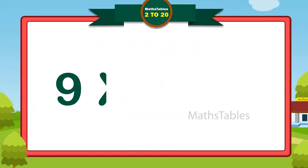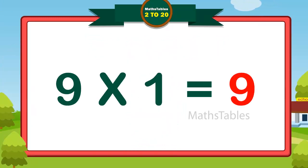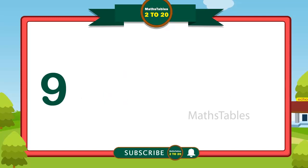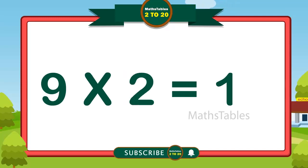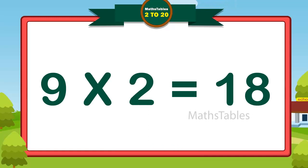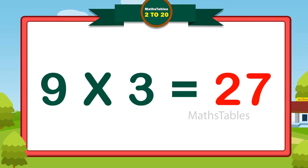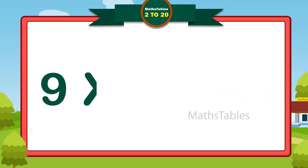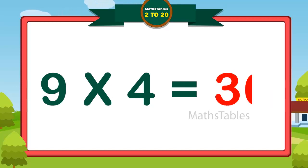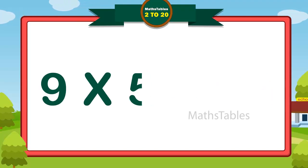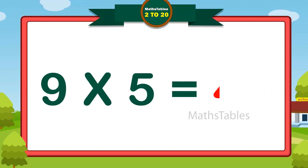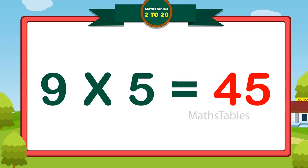9 ones are 9. 9 twos are 18. 9 threes are 27. 9 fours are 36. 9 fives are 45.